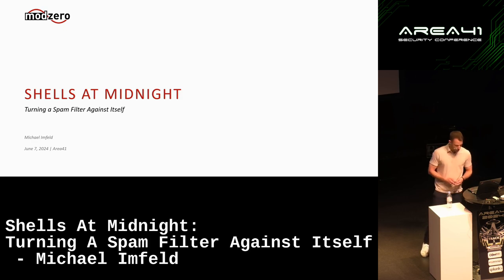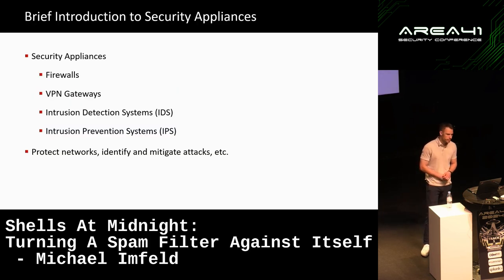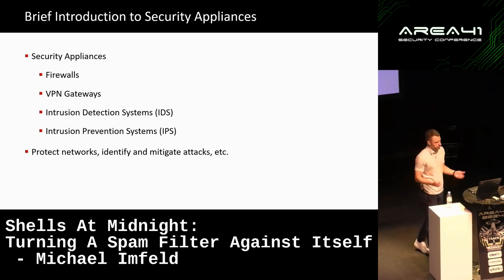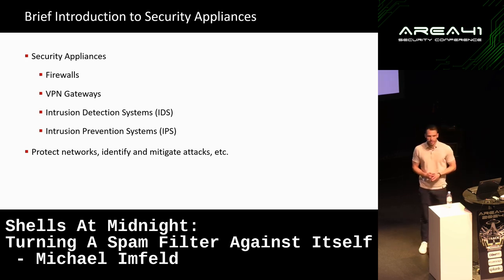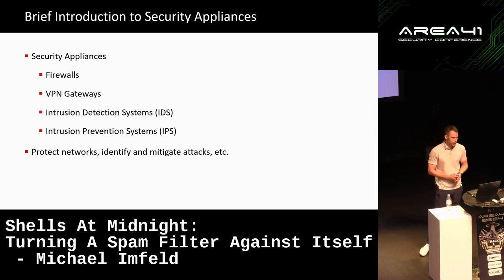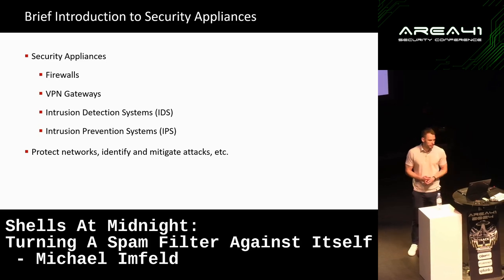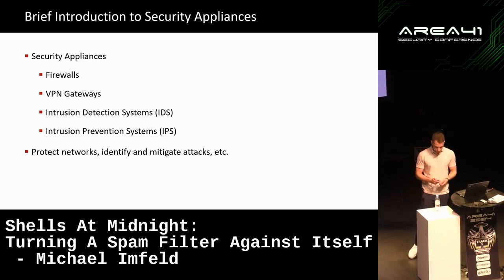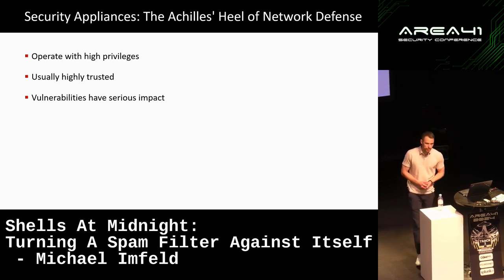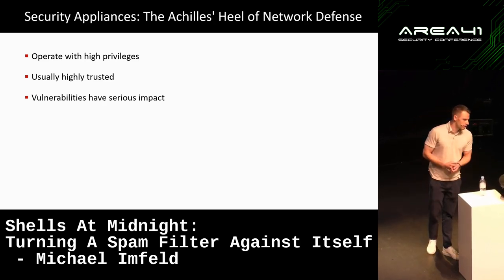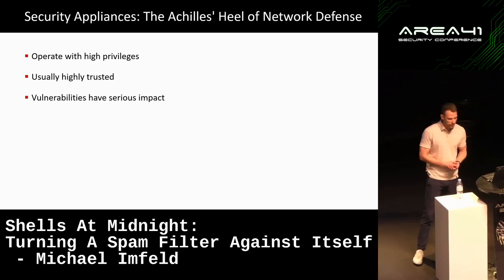Let's first start with a little background and talk about security appliances. Security appliances are all around us — we all have some in our infrastructure, such as firewalls, VPN gateways, IDS, IPS, and stuff like that. They're great; they help us protect our networks and identify and mitigate attacks. However, there's also another side, because what all these appliances have in common is that they usually operate with high privileges and are highly trusted.